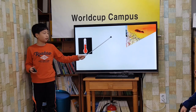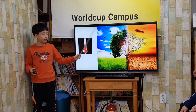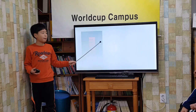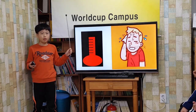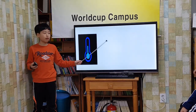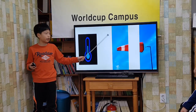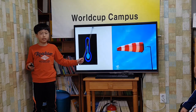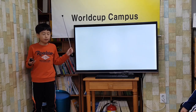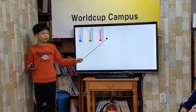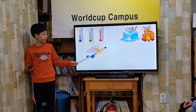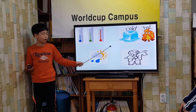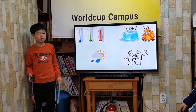Temperatures change with the weather. The temperature rises as the air gets warmer. The temperature falls as the air gets cooler. A thermometer tells you how hot or cold it is outside so it can help describe the weather.